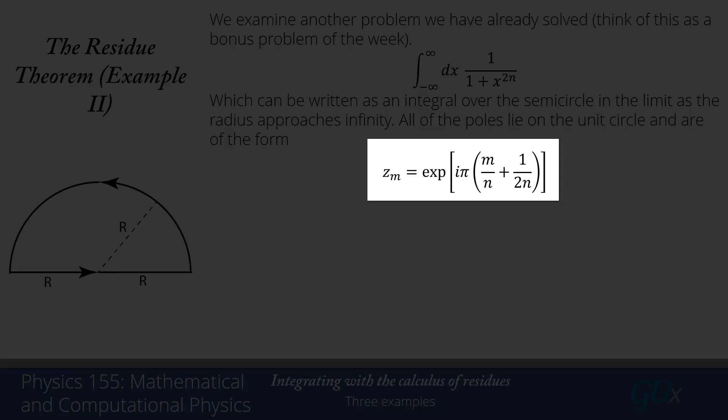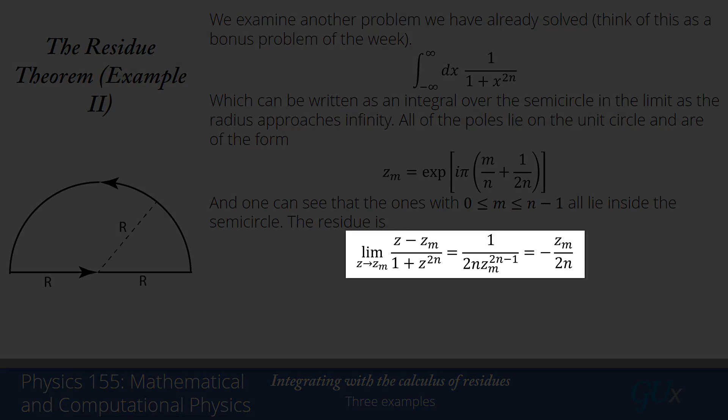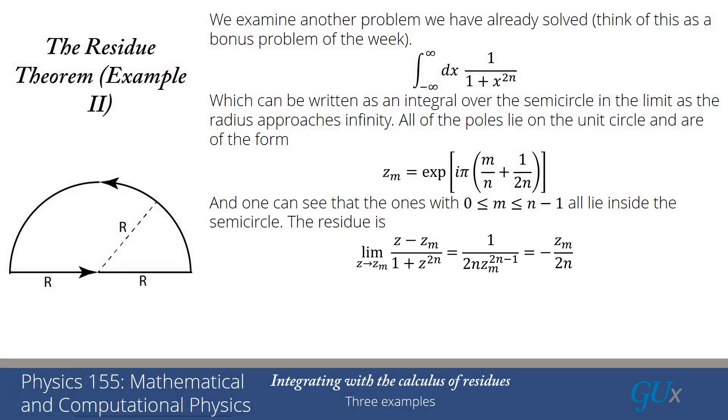When m runs from 0 to n−1, all those poles lie inside the semicircle in the upper half-plane. We calculate the residue using the same formula: limit as z → zₘ of (z − zₘ)/(1 + z^(2n)), which requires L'Hôpital's rule, giving 1/(2n · z^(2n−1)) evaluated at zₘ. Using the identity z^(2n) = −1, we write this as −zₘ/(2n). That's the residue.